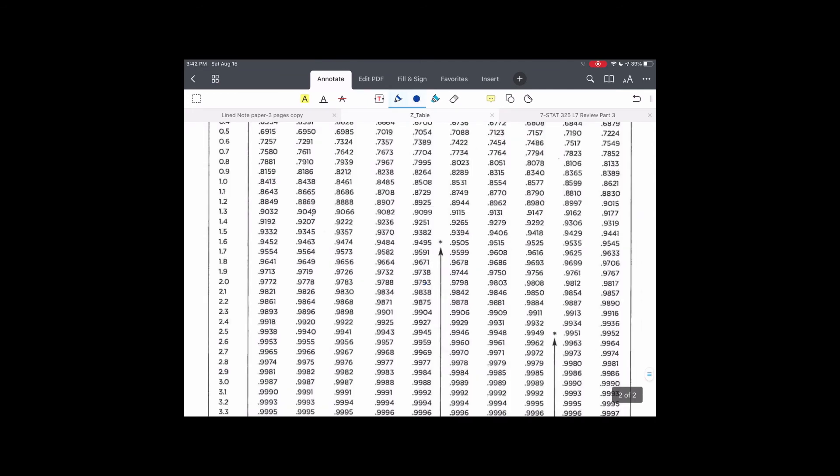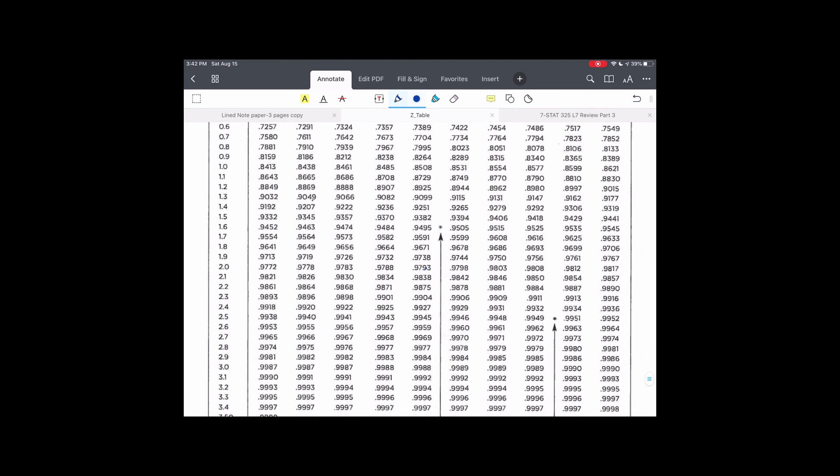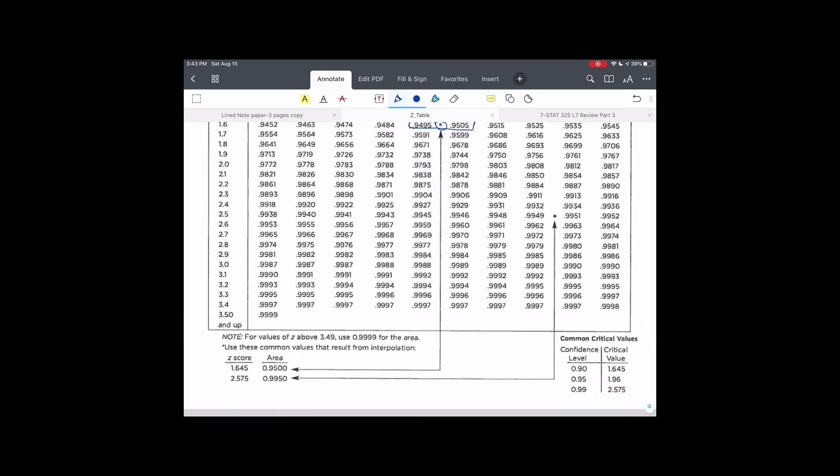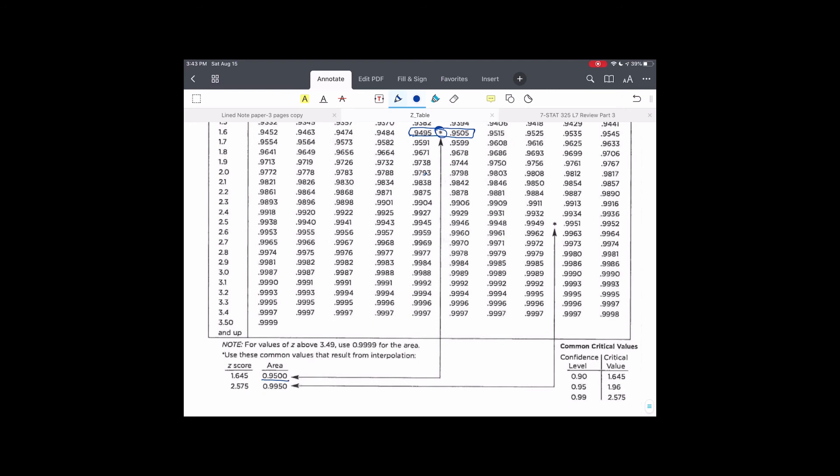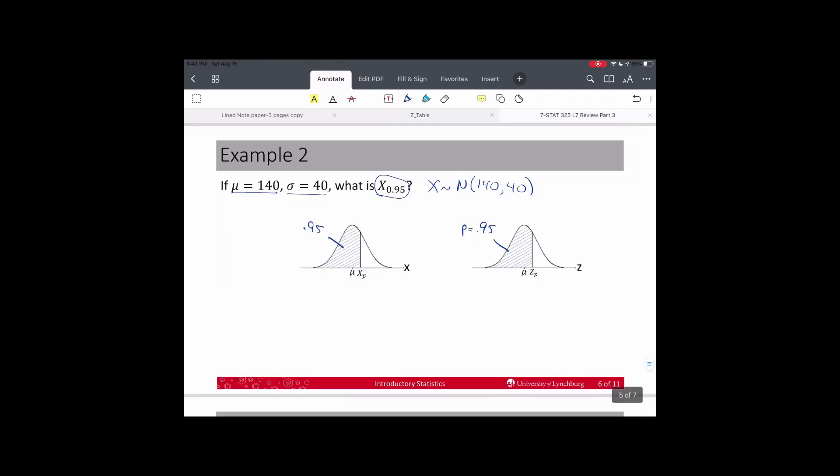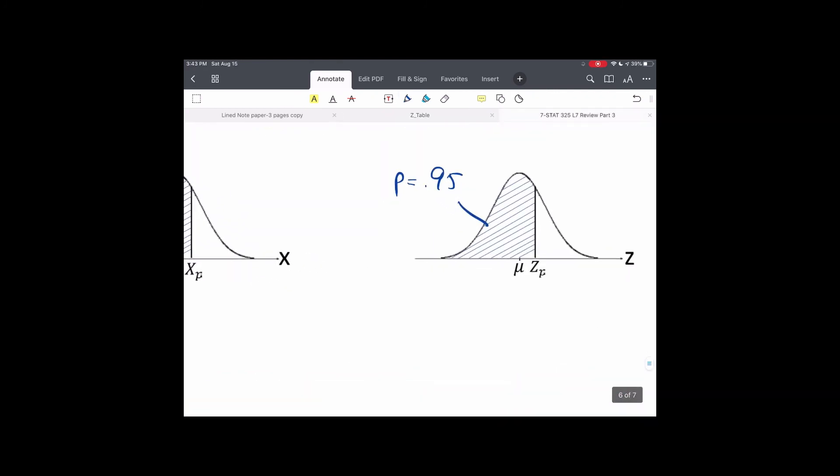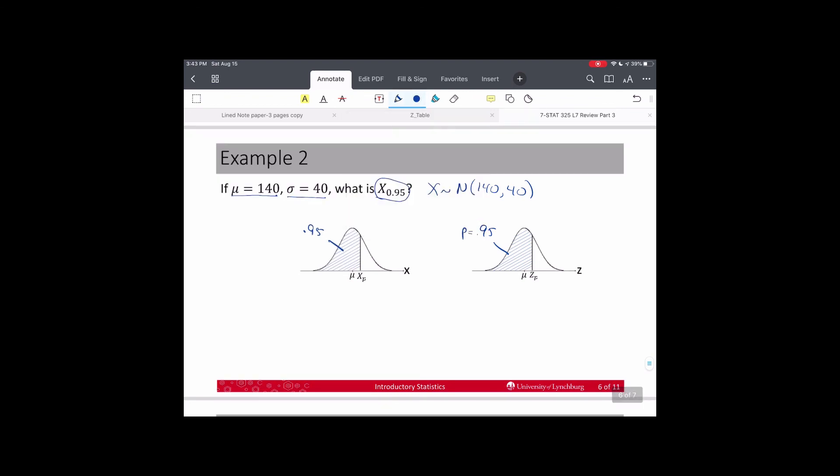Now, we find p inside the z table. So, we're looking inside the z table. I'm going to use the one from SAT 222. And I'm looking for 0.9500 in here. And these two numbers are the closest, 0.9495 and 0.9505. And then I see this asterisk, and I follow that line down to the bottom, and here's what I'm looking for, 0.9500. And the z-score that goes with it is 1.645.